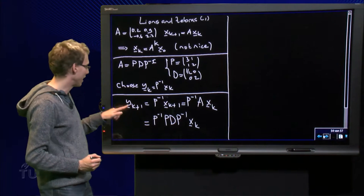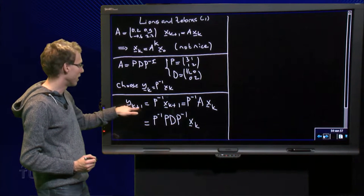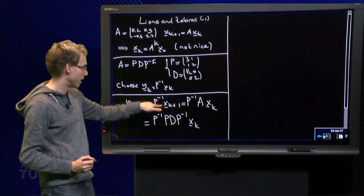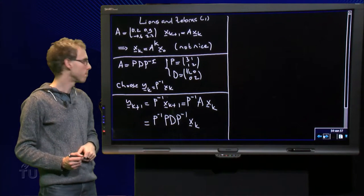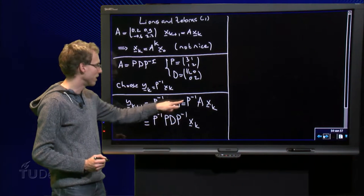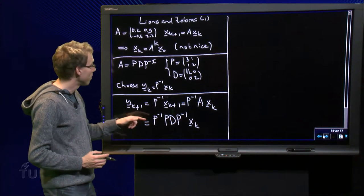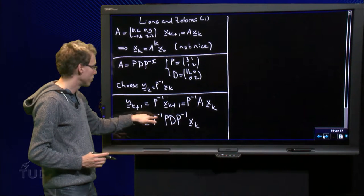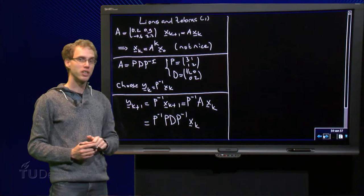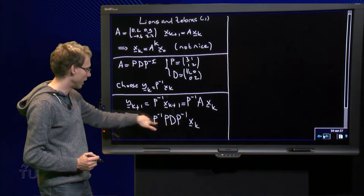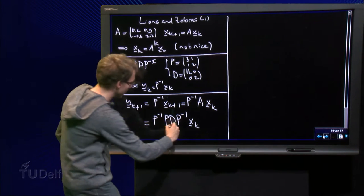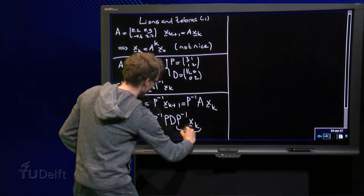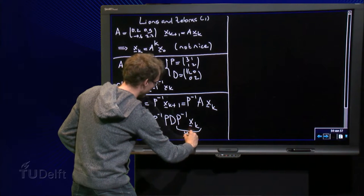In this new variable, I get y_{k+1} = P^{-1} x_{k+1}. You can put k+1 over here. But x_{k+1} = A x_k. But we know A = PDP^{-1}. So something nice is going on here. Something nice is going on here as well, because here we have a y_k.